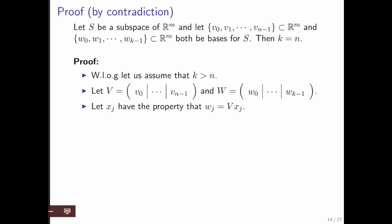Now, we know that the columns of V span this subspace. And since each w is in the subspace, for each of those w's, we can find a vector that tells you how to take linear combinations of the columns of V to generate that vector.